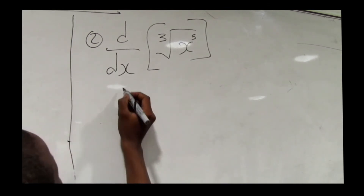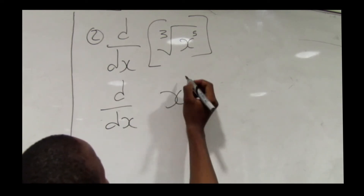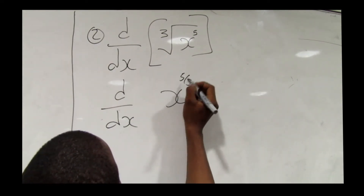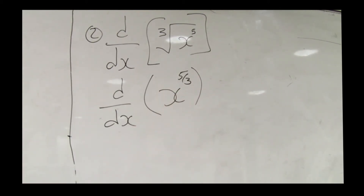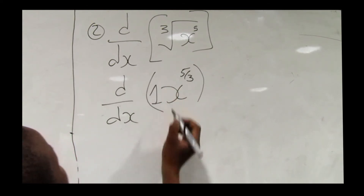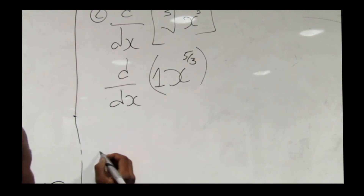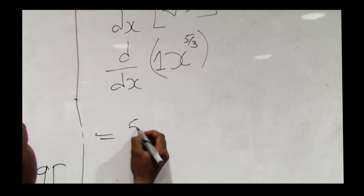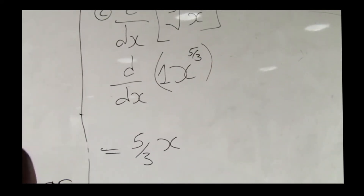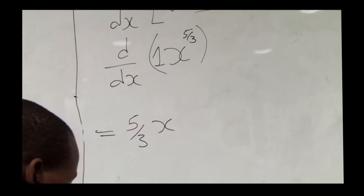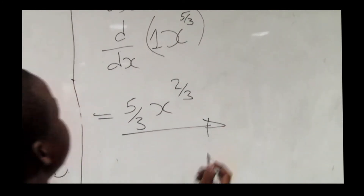Applying that rule to the cube root of x to the power 5, we write d/dx of x to the power 5 over 3. When we differentiate, we bring down the exponent: 5 over 3 times 1 gives 5/3, then we subtract 1 from the exponent: 5/3 minus 1 equals 2/3. This gives us (5/3)x to the power 2/3.